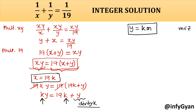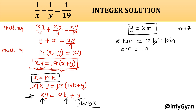Now put that value in the equation. The equation will be k times km equals 19k plus km. One k term will be cancelled out, so km is equal to 19 plus m, or m times k minus 1 is equal to 19.